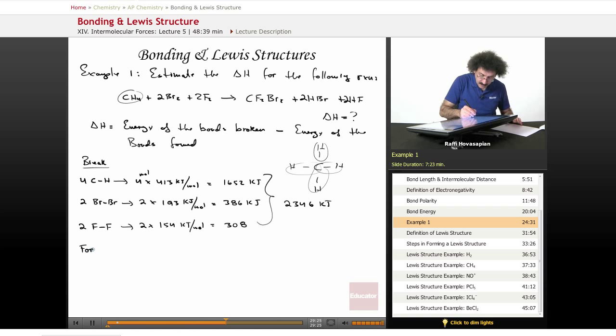Now, we're going to form some bonds. Well, what kind of bonds do we form? We form two CF bonds, right? We form two CF bonds. So it's two times 485. I'm just going to write them down. We form two CBr bonds. That's going to be two times 276. We form two HBr bonds. That is two times 363. And we form two HF bonds, which is two times, wow, 565. That's a bit of a surprise. Okay.